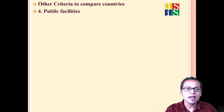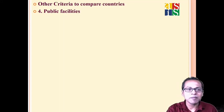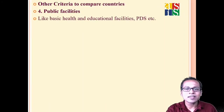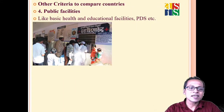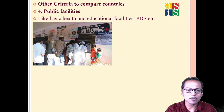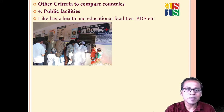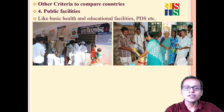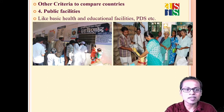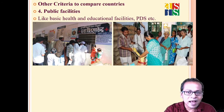One more criterion is public facilities — health and educational facilities. Public facilities are very important especially in poor nations like India, Bangladesh, and Sri Lanka. People who cannot afford good health facilities can get benefit from the government's public facilities. Many poor persons can also get food grains at very subsidized rates from ration shops. These facilities help people sustain themselves and lead to an increase in their living standards.